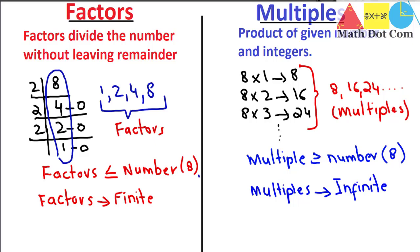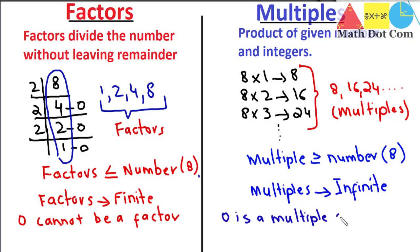Another important point: zero cannot be a factor of any number, because dividing any number by zero gives an undefined result. However, zero is a multiple of every number, because multiplying any number by zero gives zero — you get a defined number, zero. Dividing by zero, on the other hand, is undefined.